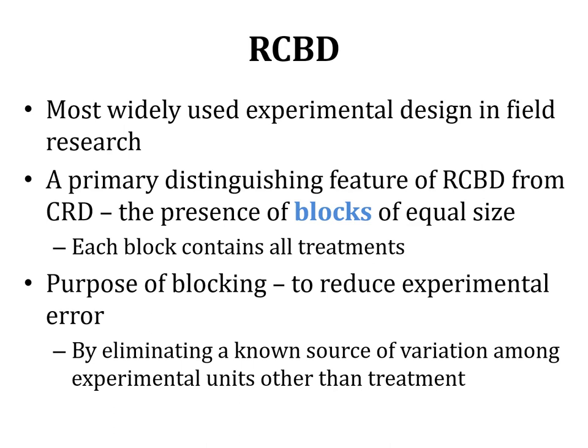In CRD, there are only those nuisance factors that cannot be controlled — they are minimum and contribute to experimental error. But in the field, if we have a known and significant source of variation with a significant enough effect on the experiment, we need to make blocks to counter it. The purpose of blocking is to reduce the experimental error by eliminating a known source of variation among experimental units other than treatment.